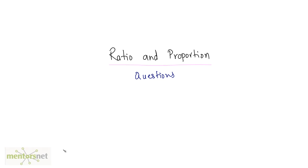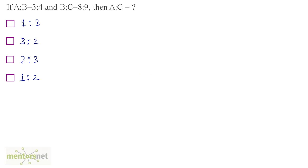Hey guys, let's solve some questions on ratio and proportion. You have been given a is to b which is equal to 3 is to 4 and b is to c which is 8 is to 9. Then what is a is to c?